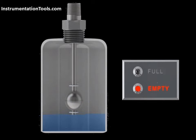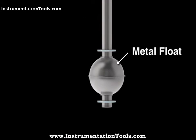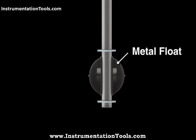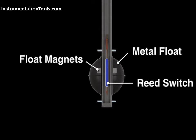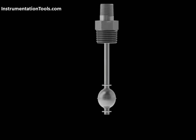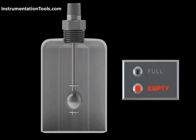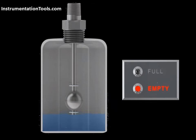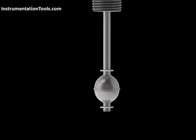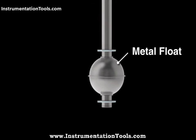Floats are most commonly used for narrow-level differential applications such as high-level and low-level alarms. Float level switches use a float containing an internal magnet and a stem with an encapsulated, hermetically sealed reed switch. As the float rises and falls with the liquid level, its internal magnet causes the switch circuit to open and close.